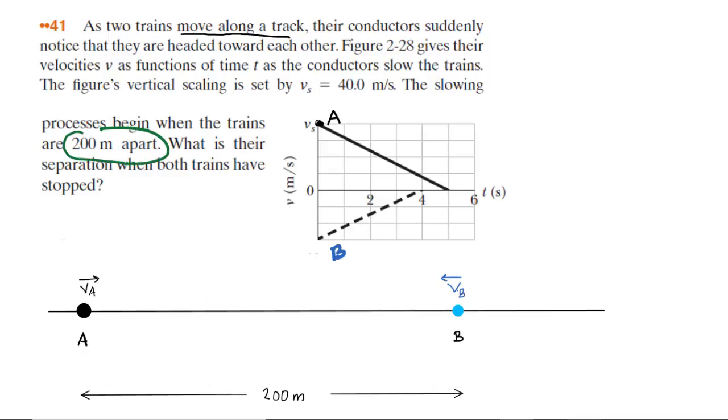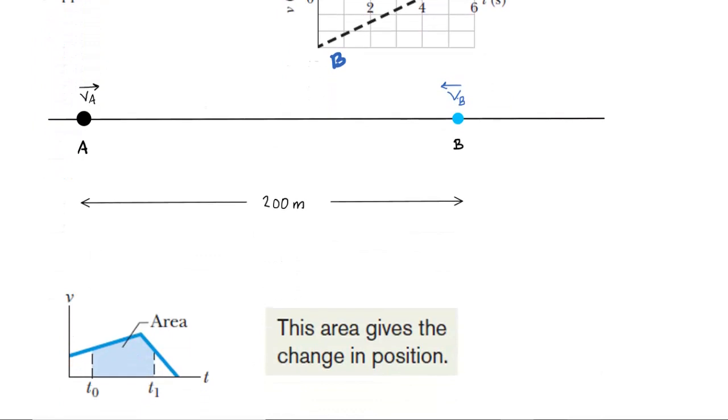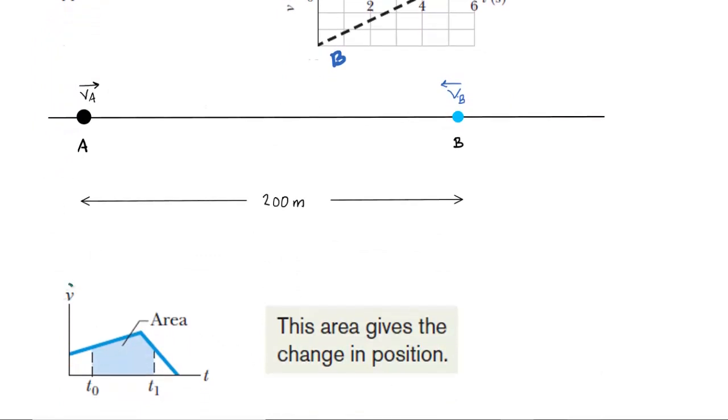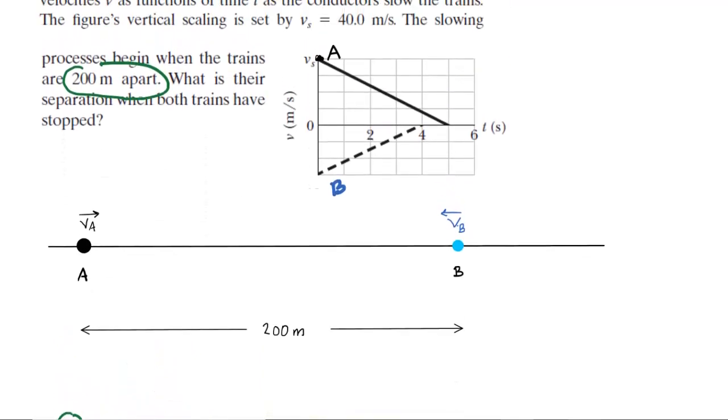One of the key concepts that will help us answer this question is to understand that for a velocity versus time graph, the area between two time limits will give us the change in position, which is also known as the displacement. So the key to understanding this question is to note that on a velocity versus time graph, the area will give us the displacement of each train.